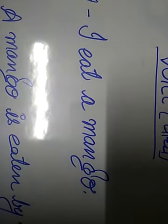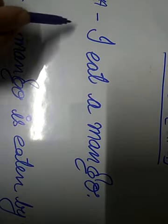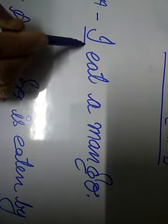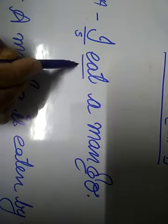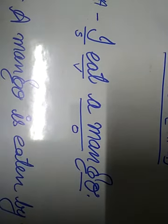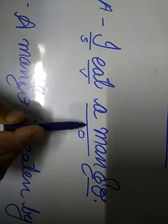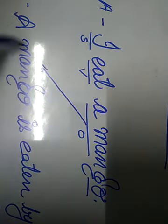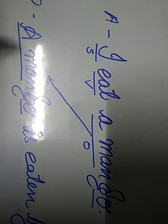Now the question is, how are we going to convert this sentence into passive? First of all, you need to recognize what is the pattern. We all know this is subject, this is verb, and this is an object. First of all we need to pick an object and start a sentence with the object. Now a mango becomes our subject in passive.